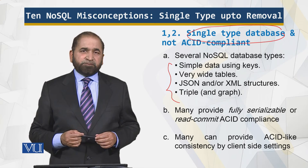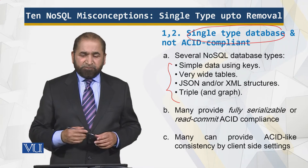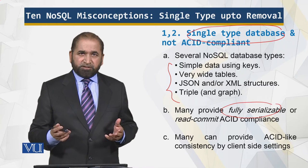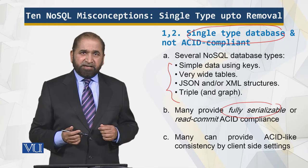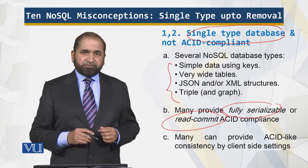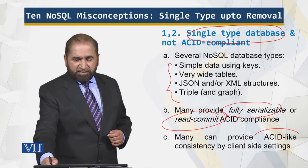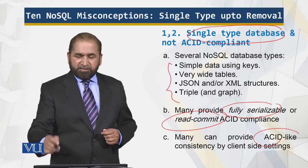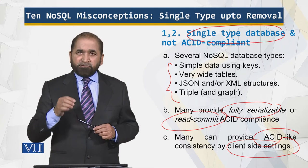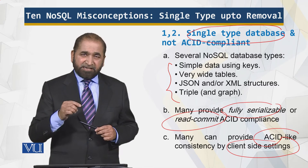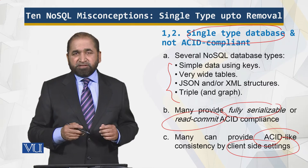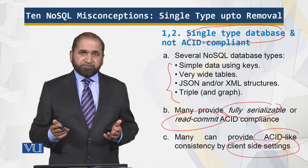The next misconception is that NoSQL is not ACID compliant — that is not the case. For example, it is fully serializable in certain types of implementations, and it also offers read-committed ACID compliance. There is also ACID-like consistency available through client-side settings, where you set certain parameters at the client end to ensure ACID-like consistency. So that misconception is not the case.